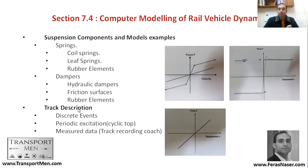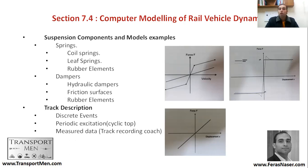For track description, you have several approaches: discrete events, where each section has its own geometry; periodic excitation, which models track irregularities with cyclic up-and-down variation; and measured data based on track recording coaches. Those trains tour around the entire network to detect any faults and provide an understanding of the infrastructure's condition.